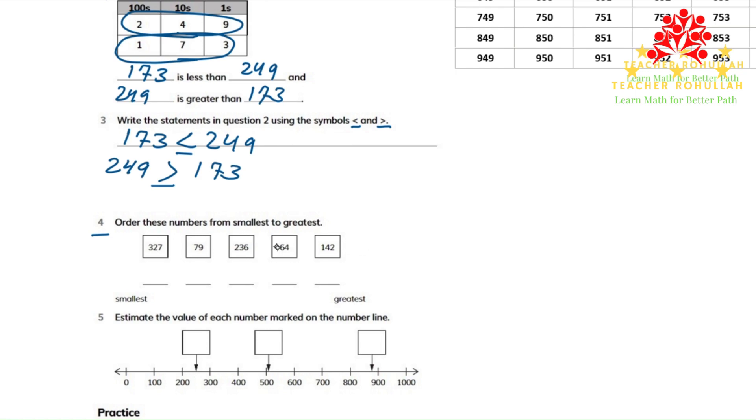So the smallest number here is 64, the second one is 79, then 142, then 236, and then 327.